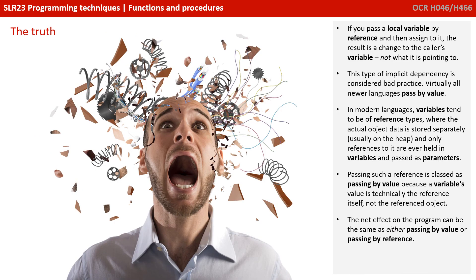If you pass a local variable by reference and then assign to it, the result is a change to the caller's variable, not what it is pointing to. This type of implicit dependency is considered a really bad practice and virtually all newer languages therefore pass by value. In modern languages, variables tend to be of reference types, where the actual object data is stored separately, usually on the heap, and only references to it are ever held in variables and then passed as parameters. Passing such a reference is classed as passing by value because a variable's value is technically the reference itself and not the referenced object. The net effect on the program can be the same as either passing by value or passing by reference.